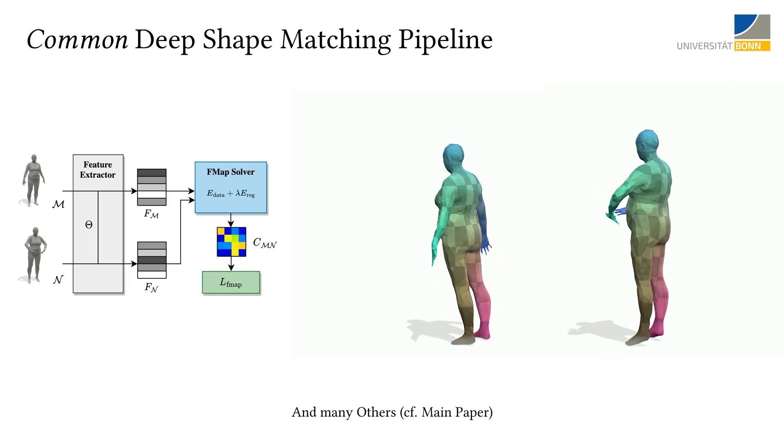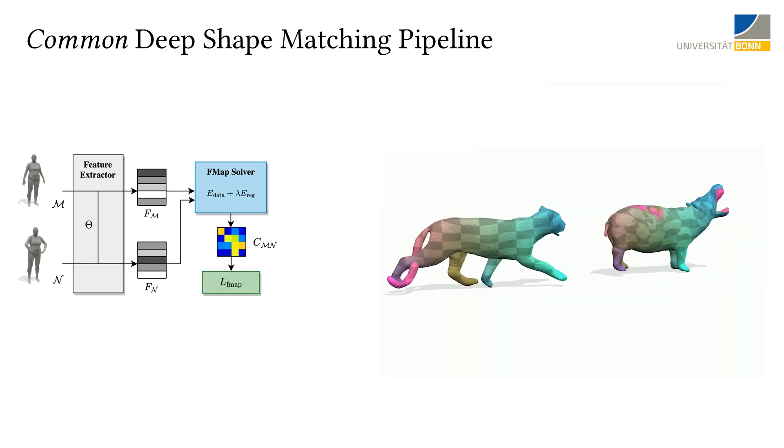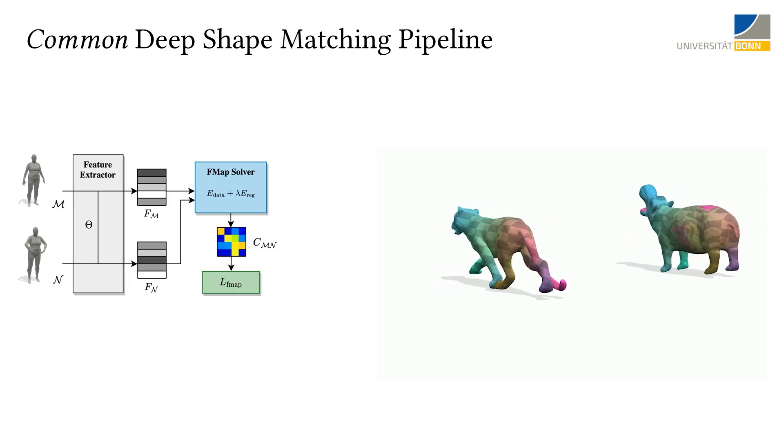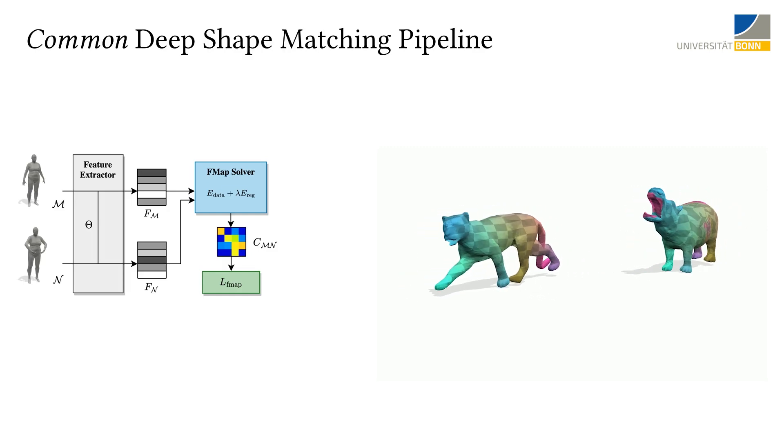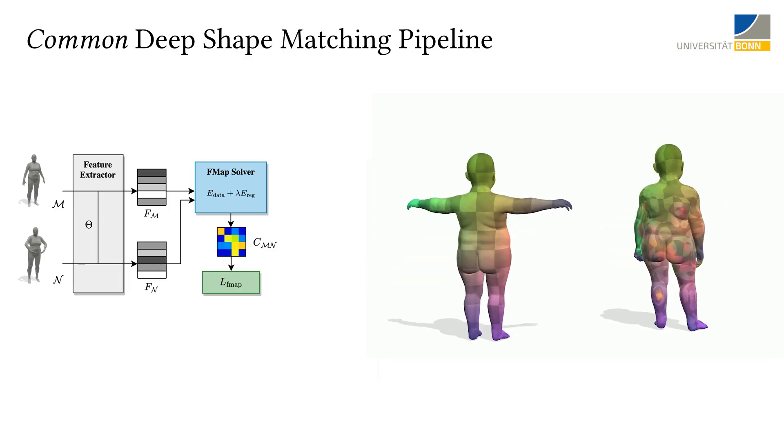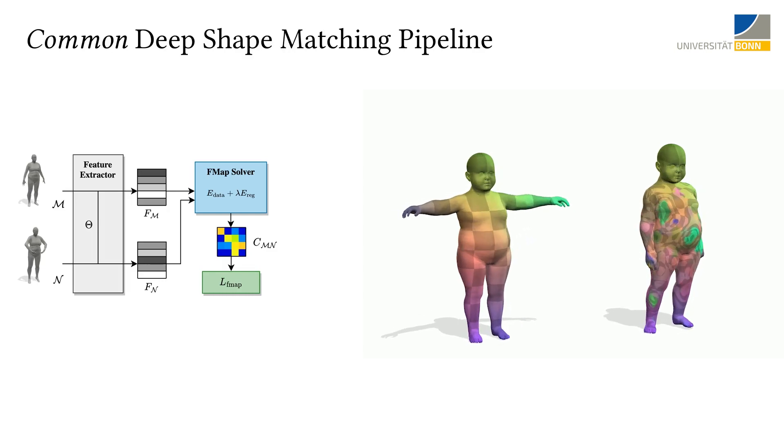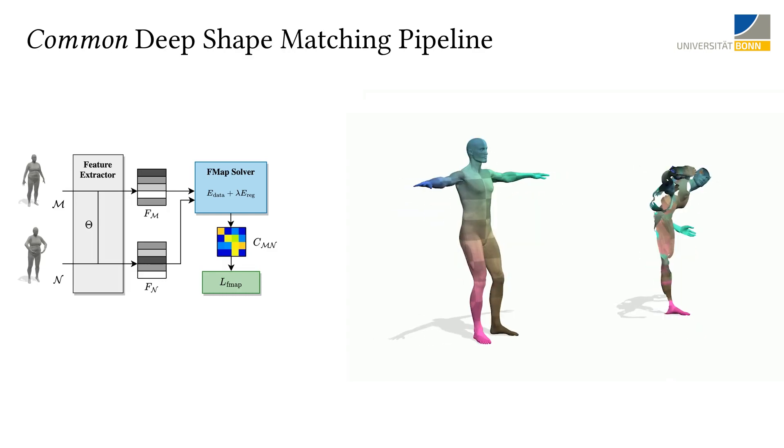Both achieve good performance on near-isometric pairs but struggle in more challenging scenarios, for example, in the case of non-isometric deformed shapes, shapes with topological noise, and partial shapes.